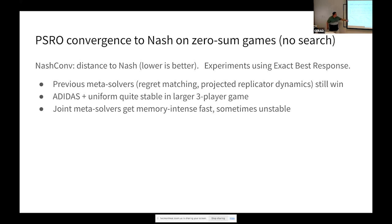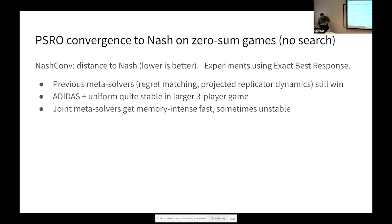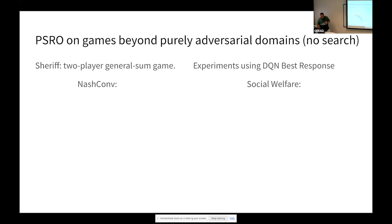Adidas is a new meta-solver from just last year — the only one in our set actually guaranteed to converge to a Nash equilibrium in the n-player general-sum case. What's interesting is it's stable, but it doesn't produce strategies that approach Nash equilibrium as fast as methods that aren't guaranteed to converge, which I think is interesting.